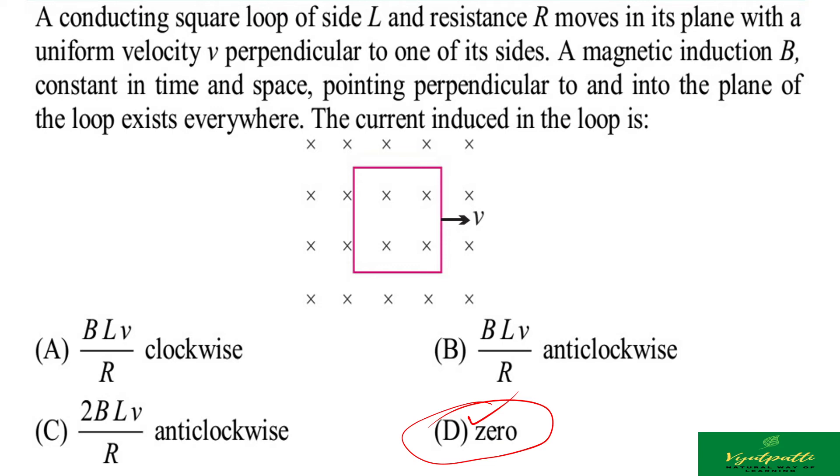इसमें induced EMF होता है, definitely BVL हमने पढ़ा था। सर, induced EMF है तो net induced current अगर zero है तो मतलब net induced EMF zero हो गया। तो यहां पर ऐसा कैसे possible है दोस्तो?